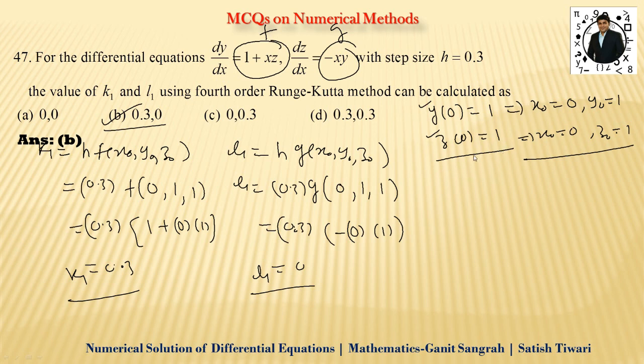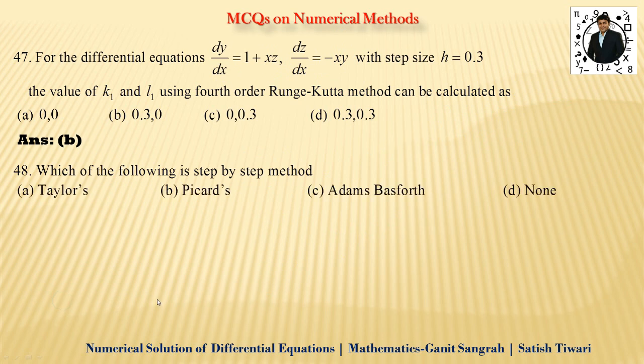Toh mostly dekho, initial condition example mein dena chahiye. Moving to the next question 48, which of the following is a step by step method. Toh step by step dekhiye. Taylor series toh series method hai hamara paas. Picard's bhi hamara integration wala method step by step nahi hai. Adams-Bashforth, yeh method hamara actually step by step hota hai. Jaise hai hum Euler's wala method apply karte hai na, aur Milner's predictor-corrector wala. Toh us type mein Adams-Bashforth bhi aata hai. Toh option C yaha pe correct hai.